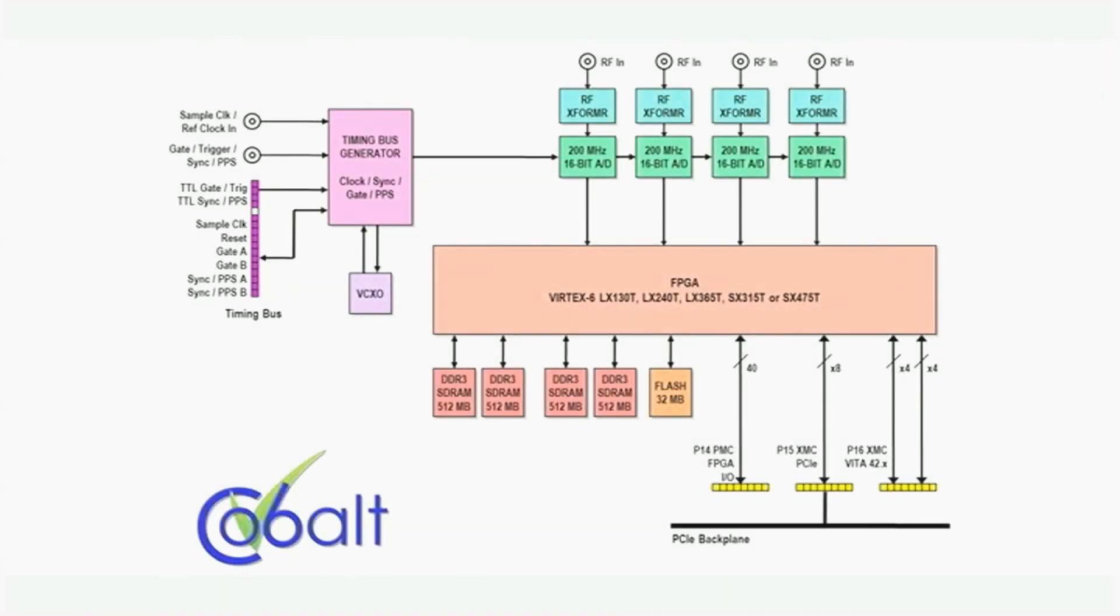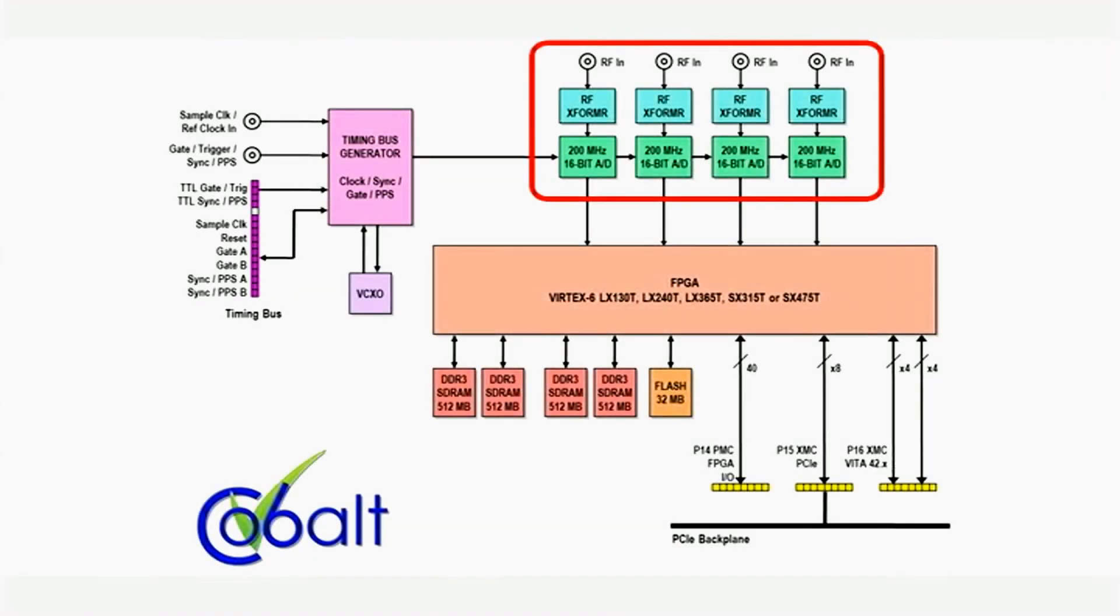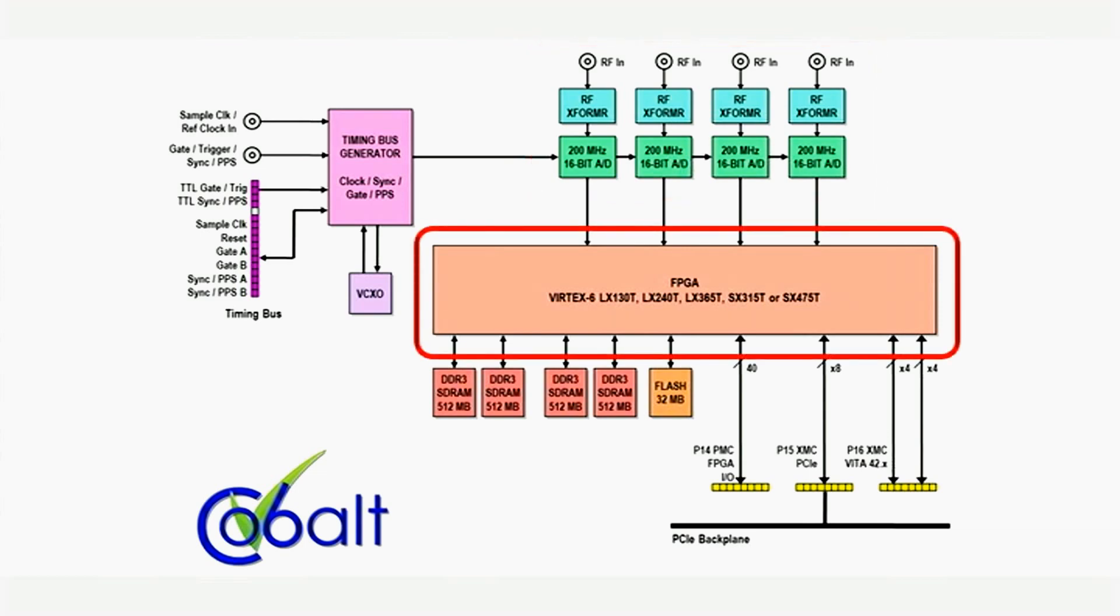At its core, the 53662 is a 4-channel, 200 MHz, 16-bit A-to-D board equipped with a Vertex 6 FPGA and 2GB of DDR3 Synchronous DRAM.